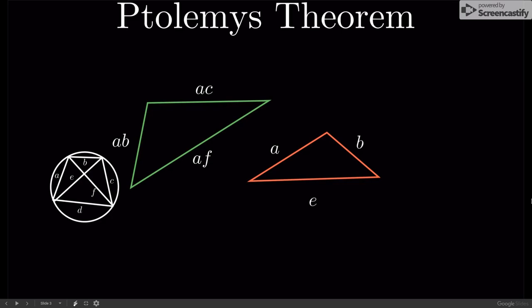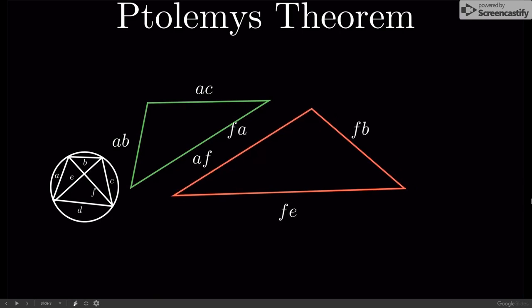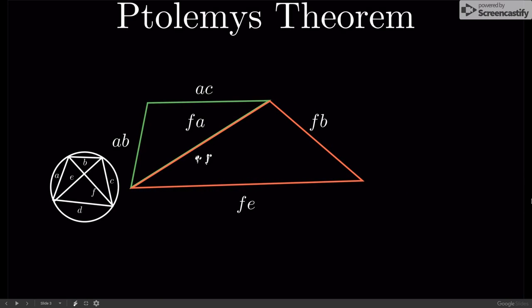This one has side lengths AB and E, and we scale it up by a size F. Notice how AF equals FA, so those two sides that mapped onto each other are equal. Doing the same thing with this last triangle, we see that it has side lengths AD and F, and we scale it up by a side length B.